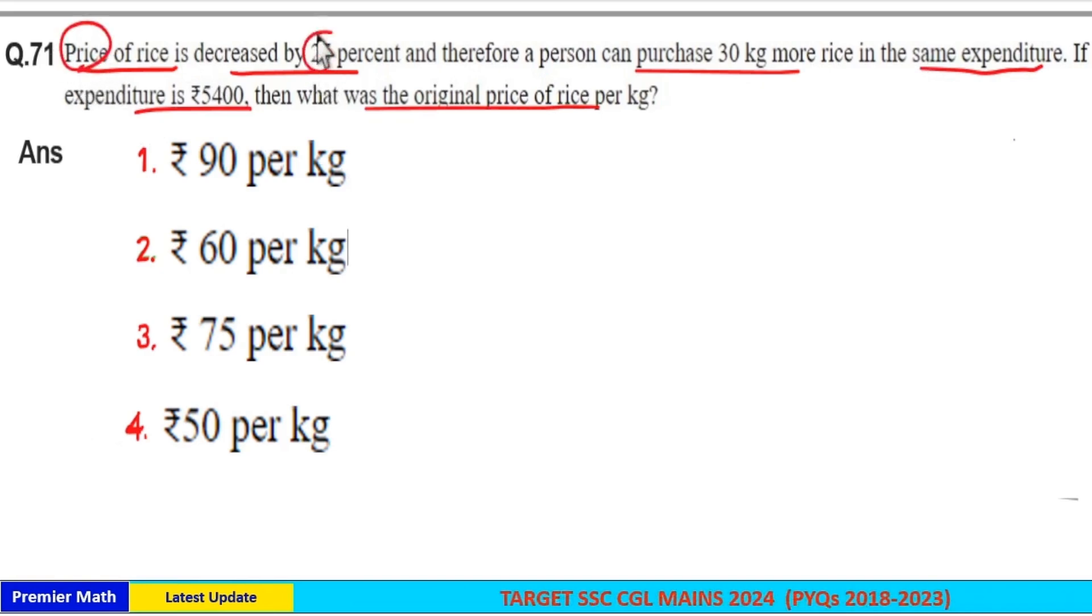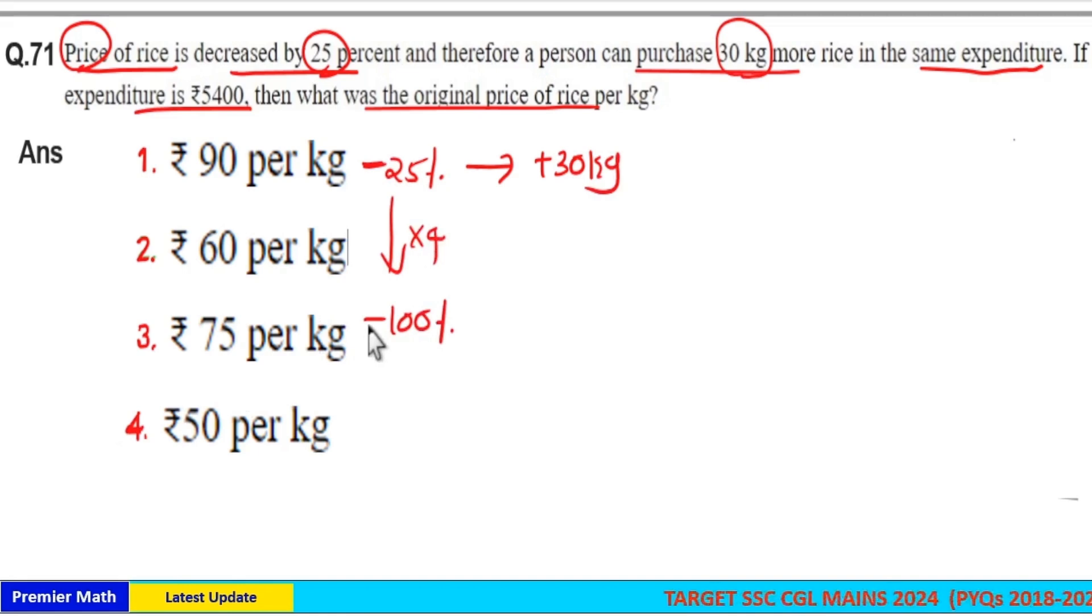When you reduce the price by 25%, you will get 30 kg more. This 25% reduction leads to 30 kg more. When you reduce the price by 100%, since 25 into 4 is 100%, the 100% price reduction leads to 30 into 4, which is 120 kg more.